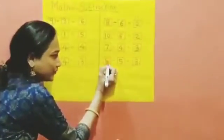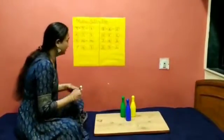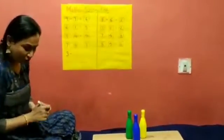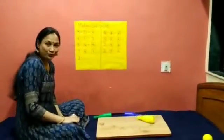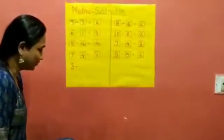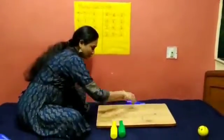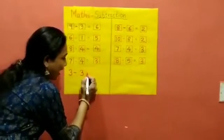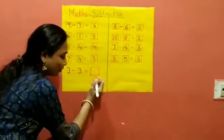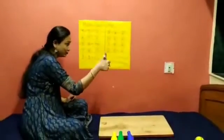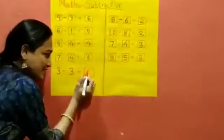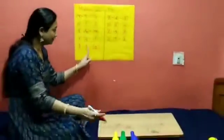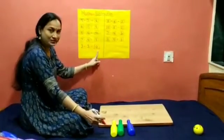How many bottles are there? 1, 2, 3. So 3 bottles are there. And teacher is going to throw the ball — all bottles fell down! 1, 2, 3. All 3 bottles fell down. So how many bottles are left? Nothing. Nothing means what? 0. So 3 bottles were there, 3 bottles fell down, so how many left? 0.